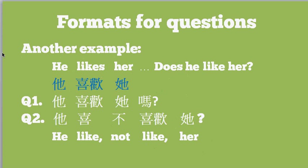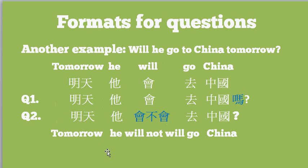Let's look at another example that also brings back the characters from the beginning of the video. 'He likes her' — these are the two characters that mean 'like,' and that's 'her.' So the statement is 'he like her.' In English we have to change that to 'does he like her' to make a question. In Chinese you just say 'he like her ma?' — put 'ma' at the end and it's a question meaning 'does he like her?' The other way is offering two choices: 'he like not-like her?' The answer would simply be 'like' or 'not like.'